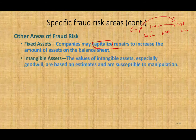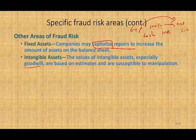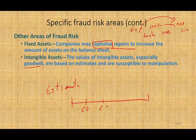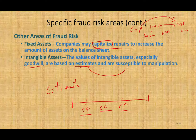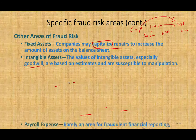Another fraud risk area is intangible assets — these are actually high-risk areas. The value of intangibles such as goodwill or asset impairment requires estimation. Every time you hear the word 'estimate,' there's room for fraud. You need to estimate the cash flow of the asset, and the company does that estimate. So every time you have estimates to make, they could be susceptible to manipulation — this is another high fraud risk area.